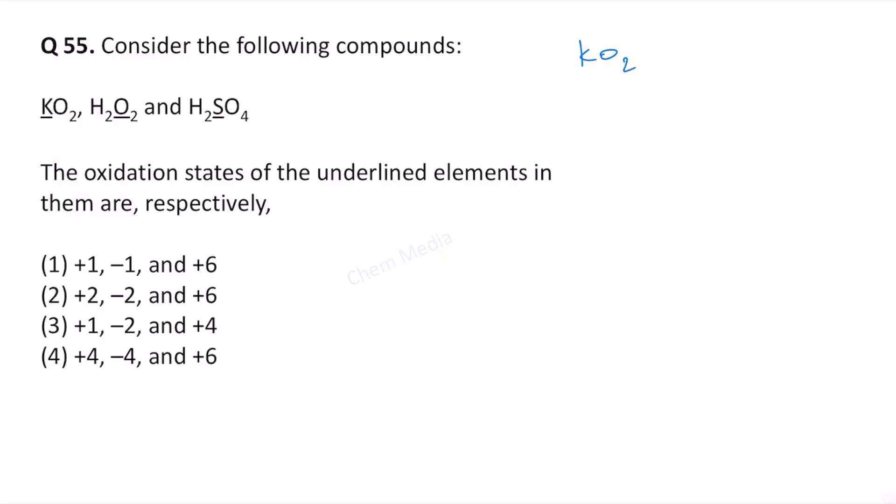In KO₂, what is the oxidation state for potassium? KO₂ is a superoxide. In superoxides like KO₂, the oxygen atoms are in a superoxide ion that is O₂ minus.